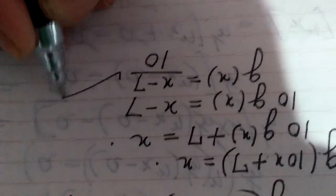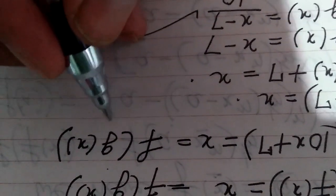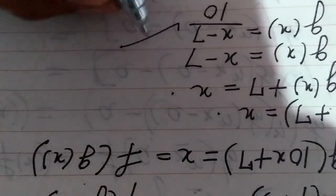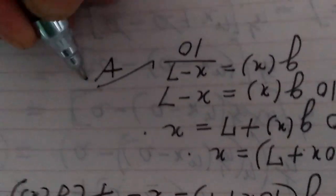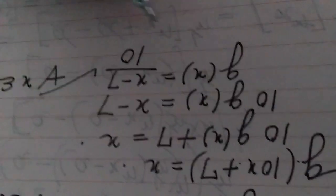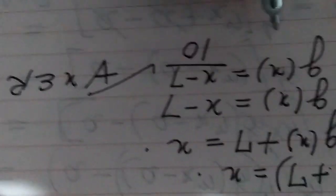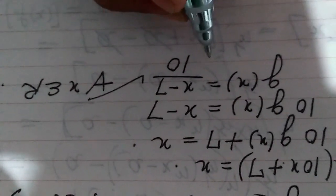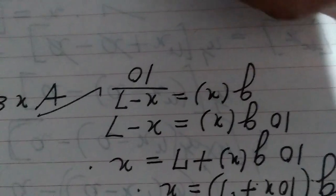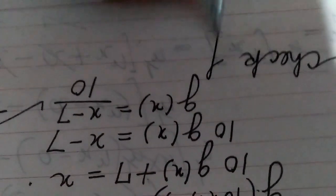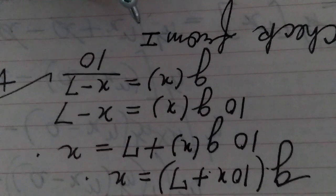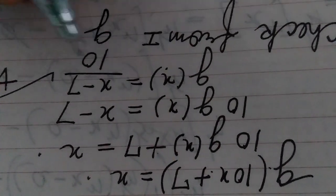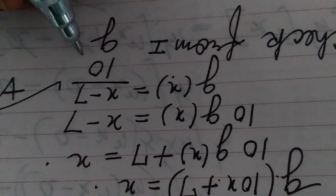So we have obtained the value of g(x). g(x) = (x − 7) / 10, for all x belonging to ℝ. This is the value of function g(x). If we want to check whether this value is correct, we give this equation as number 1 and check by substituting values of x in place of g(x) to verify.